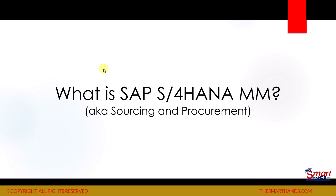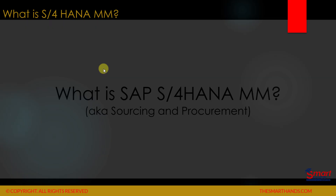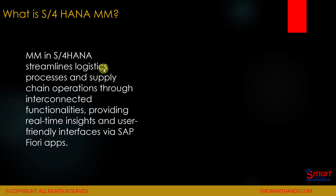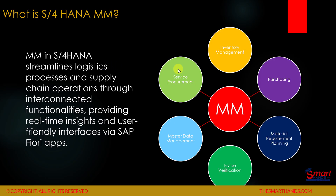Now we'll learn what is MM in SAP S4 HANA, also known as Sourcing and Procurement. S4 HANA MM streamlines logistic processes and supply chain operations through interconnected functionalities, providing real-time insights and user-friendly interfaces via the SAP Fiori apps. MM consists of different sub-modules, for example purchasing, Material Requirements Planning (MRP), invoice verification, master data management, service procurement, inventory management, and more. We'll learn in more detail in the next videos.